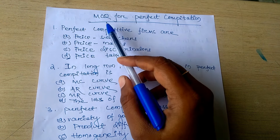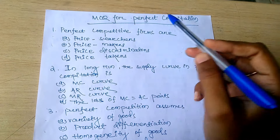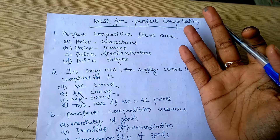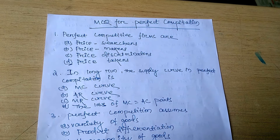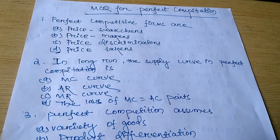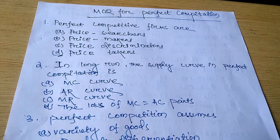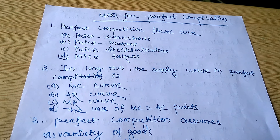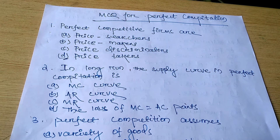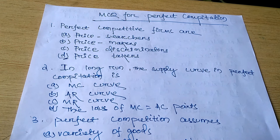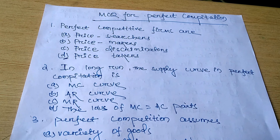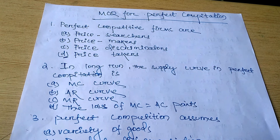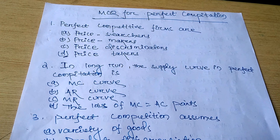Today we have to discuss MCQs of perfect competition. Before I discuss the MCQs, I want to remember all the points of perfect competition. As you know, a large number of buyers and sellers are there selling homogeneous goods. Industry is the price maker and firms are the price taker. There is no advertisement cost.